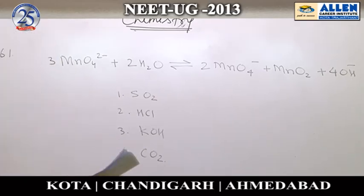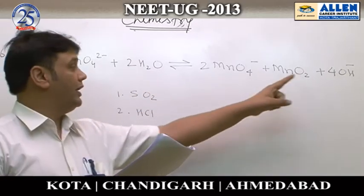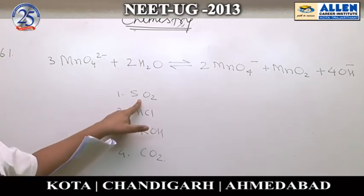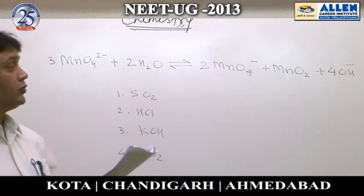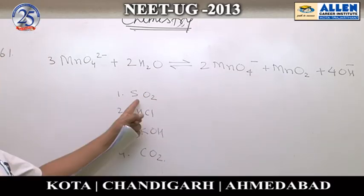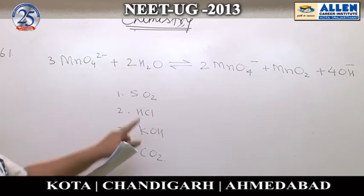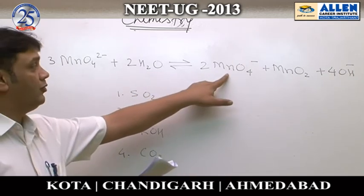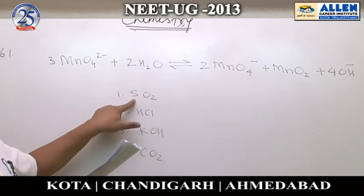The first option is SO₂. Can OH⁻ be removed by SO₂? The nature of SO₂ is acidic, so it appears that yes, it can remove OH⁻ because being acidic in nature, it can absorb the OH⁻ ion. But the problem is that SO₂ can be oxidized by KMnO₄, and that is why this is not the appropriate reagent.